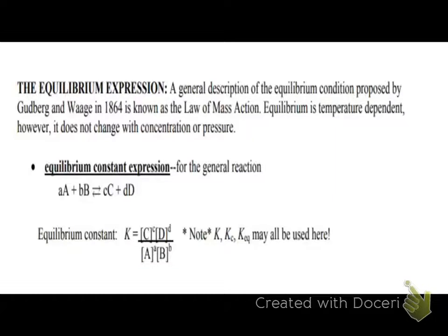So, the equilibrium expression, this is how we calculate it. So, we have this general equation, A plus B yields C, D. So, it's going to be calculated by K is going to be products over reactants raised to their coefficients. So, you don't have to figure out what the coefficients are, those superscripts are going to be the coefficients in the problem. So, again, what do the brackets mean? Concentration.